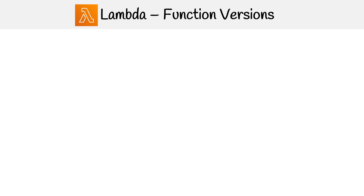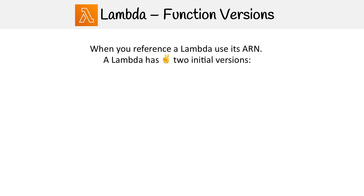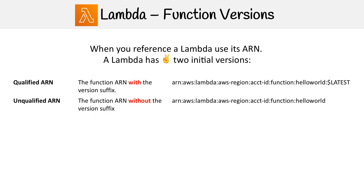One more thing to touch on about function versions is ARNs for lambda. When you reference a lambda, you're using the ARN, which stands for Amazon Resource Name. A lambda has two initial ARN forms: qualified and unqualified. The difference is really the end of the ARN — a qualified ARN has a colon suffix, which could be dollar sign latest or a colon followed by a version number like three.